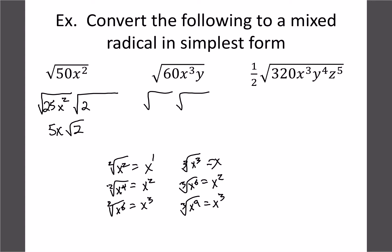For √(60x³y): 60 divides by 4 (giving 4×15), but not by 9. We have x³ — since it's a square root we can only pull out even exponents, so we take out x² and leave x as a leftover. The y has exponent 1, so we can't pull out 2 from it — it stays as a leftover. Simplifying: √4=2, so we get 2x·√(15xy) as our final answer.